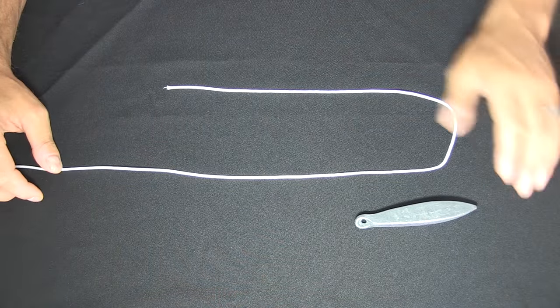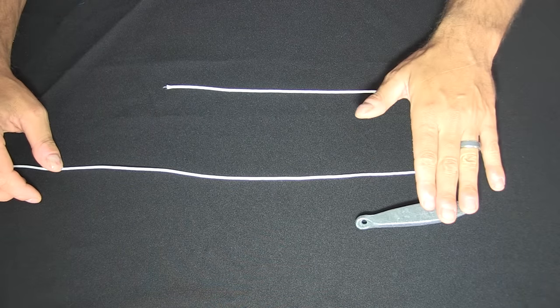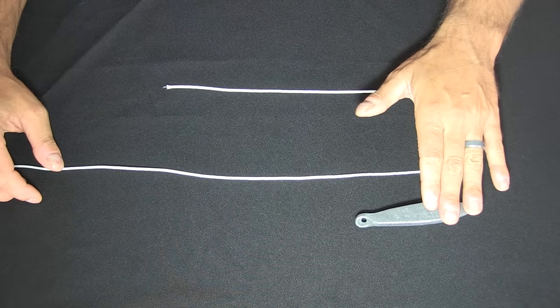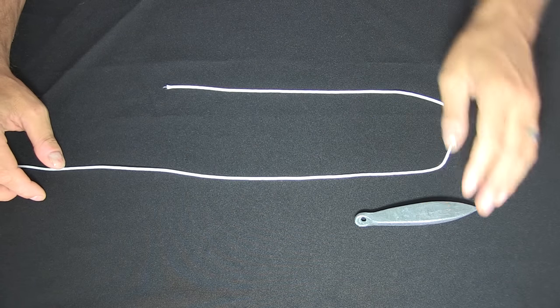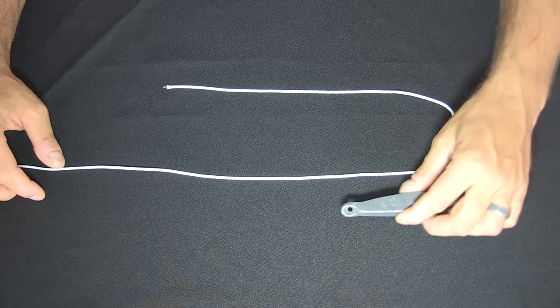To start our paternoster rig we need to create a small loop in the end of the line for our sinker. This is so that we can change sinker sizes according to the current and the depth we might be fishing in. It also allows us to remove the sinker while traveling along to ensure it's not swinging around and causing any damage to the boat.